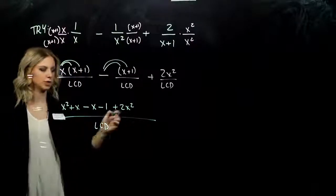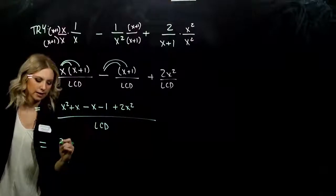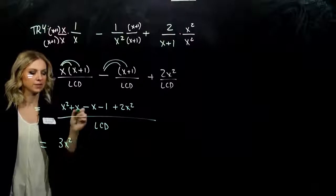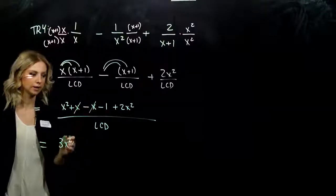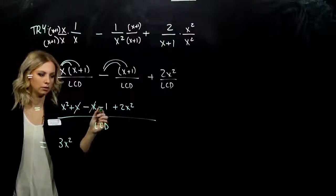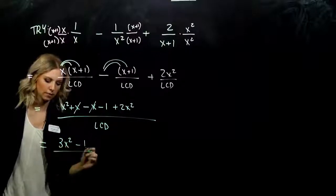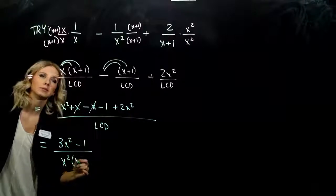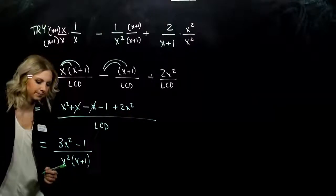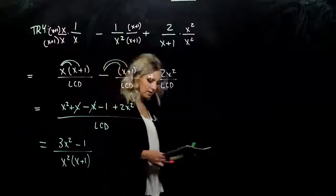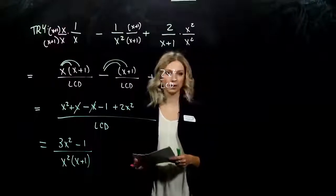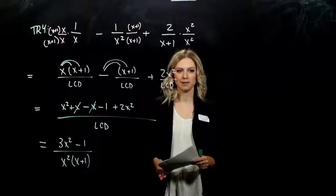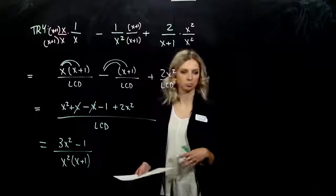Combine our like terms. I've got 2x squared and x squared. That will give me 3x squared. How many factors of x in there? I've got a positive and a negative. Those are gone. And minus 1 on the back. And what is our LCD from the very beginning? X squared times x plus 1. As we look, is there anything that we can factor out of the numerator? Common? Nope. Top and bottom? Do they share anything in common that we can factor or cancel out? No. Simplify it as far as we can go.